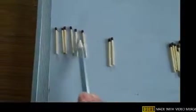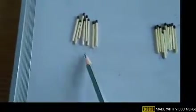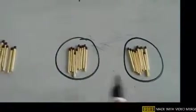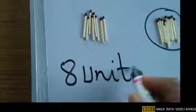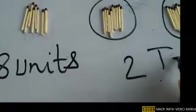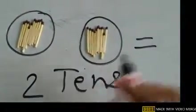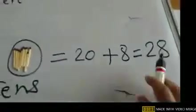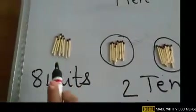Now the remaining sticks: 1, 2, 3, 4, 5, 6, 7, and 8 — so these are 8 units. In total I have 2 groups of 10 sticks and 8 single units. So 2 tens means 20, and 8 single units means 8. The number is 28. In 28 we can form 2 groups of 10 and 8 single units.